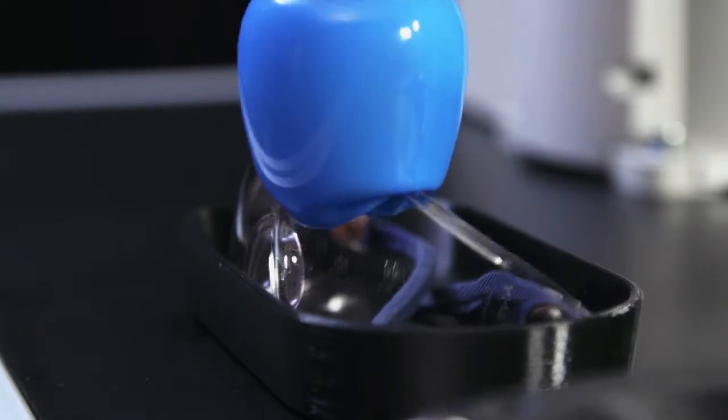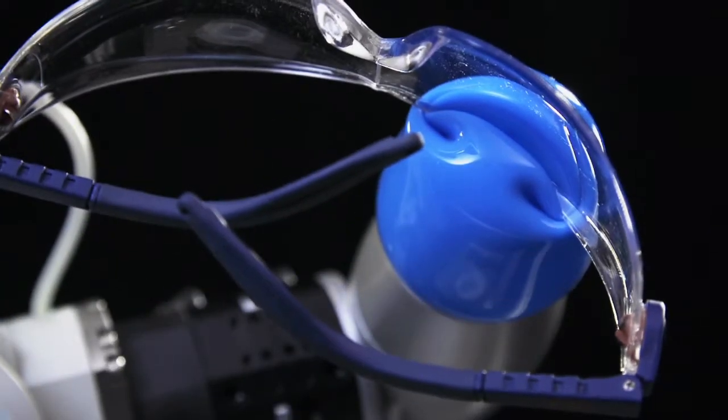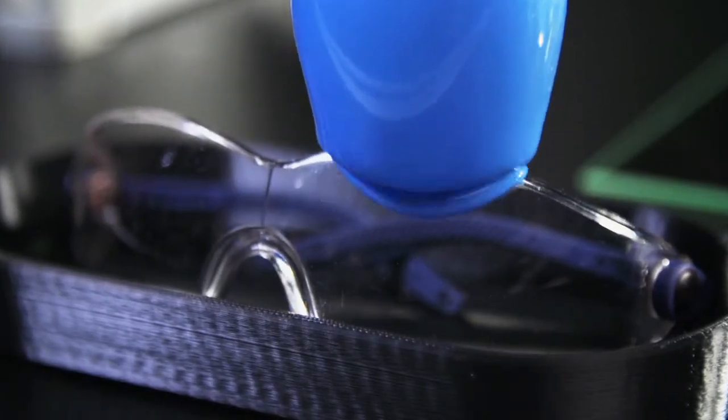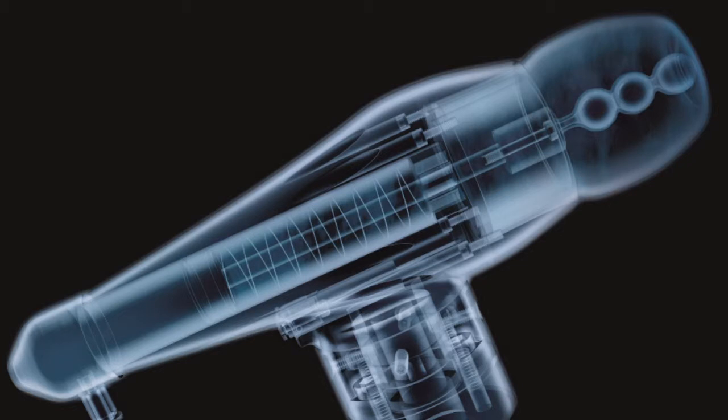Experts in bionics took a closer look at the chameleon's tongue and developed a gripper based on it. This gripper can flexibly adapt to all objects. Let's see how the gripper works.